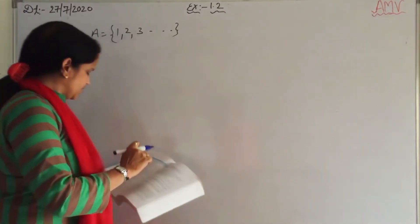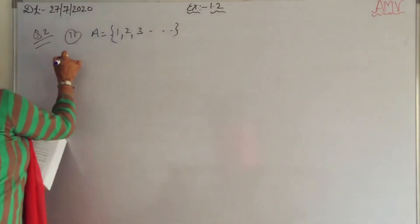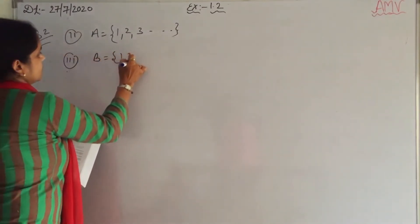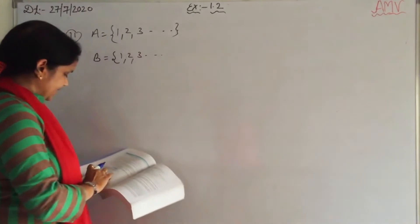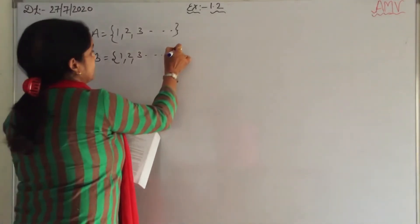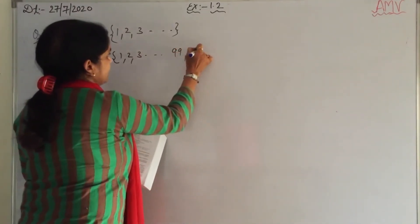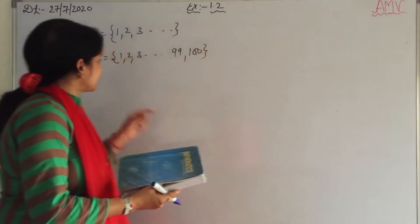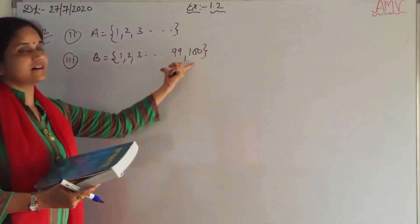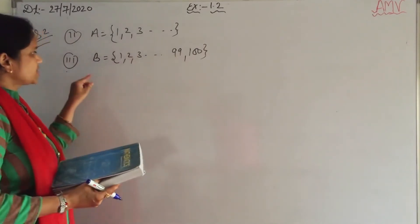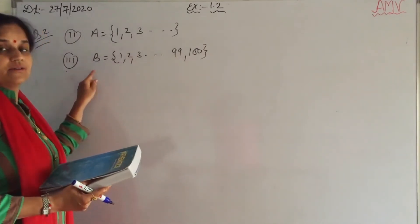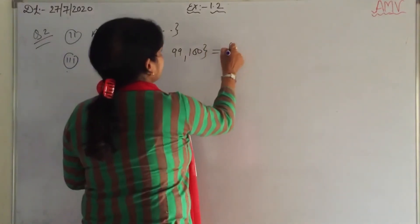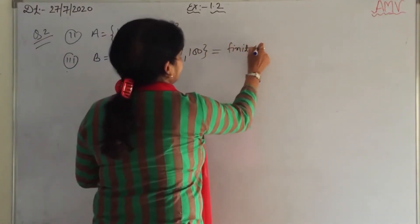Third: the set {1, 2, 3, ... up to 99 and 100}. Set B has 100 elements. So it is a finite set. Write in your notebook: it is a finite set.